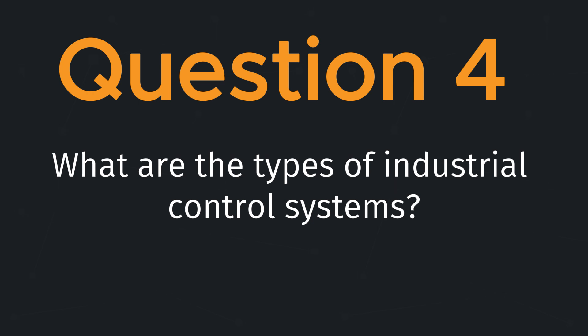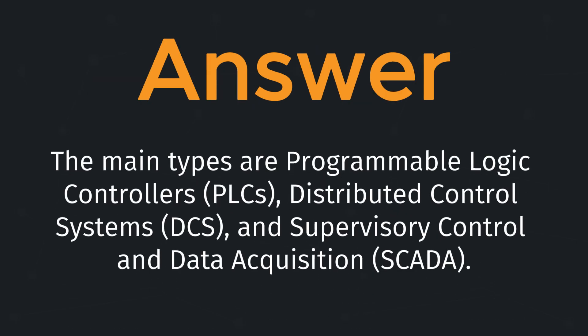Question four: what are the types of industrial control systems? The main types are programmable logic controllers (PLCs), distributed control systems (DCS), and supervisory control and data acquisition (SCADA).